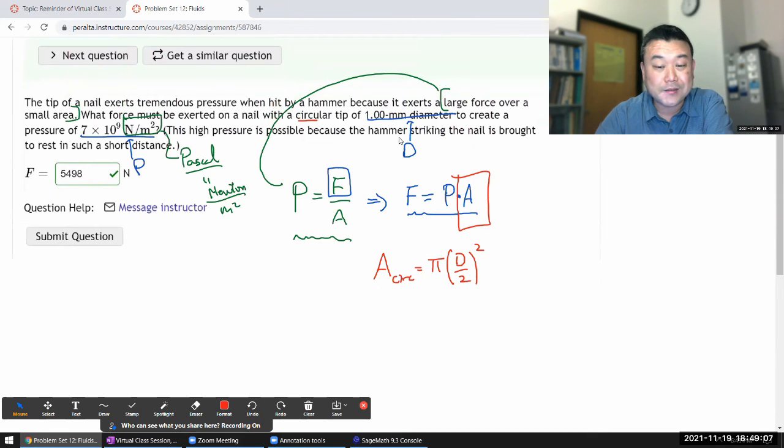And I guess that's what this comment is getting at. This high pressure is possible because, you know, the hammer is not applying this force or this pressure for a long duration of time. It's at a very short amount of time. And this is referring to short distance.